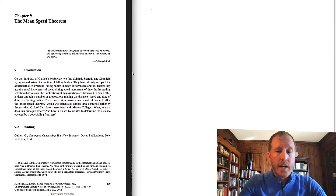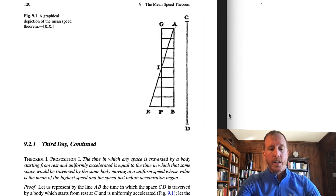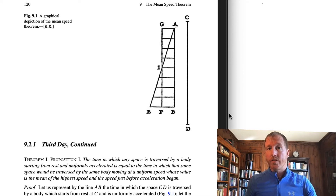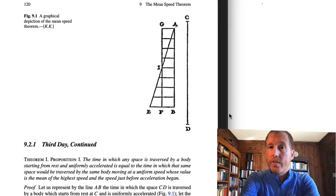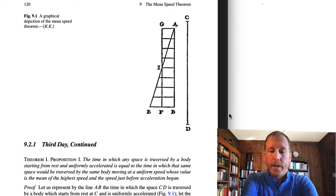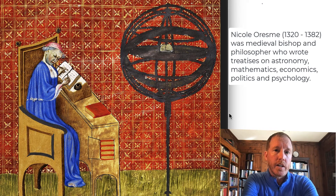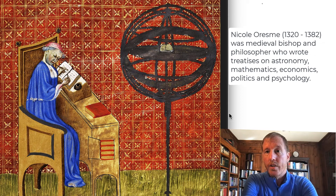So if you jump ahead to chapter 9, it is called the mean speed theorem, and on page 120 he begins to discuss it. Now, first of all, I should say that although this is something Galileo spends quite a bit of time talking about in order to explain falling objects, it is not something that Galileo discovered. It was discovered at least 300 years before, because it's talked about by a bishop and scientist named Nicole Oresme. So the medievals had come up with this kind of language to talk about moving objects long before Galileo. Galileo is inheriting some of the work of the medievals and turning it to his use.